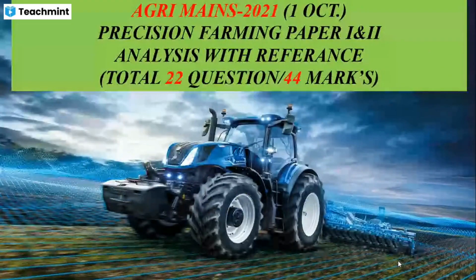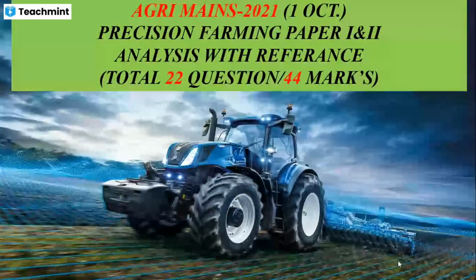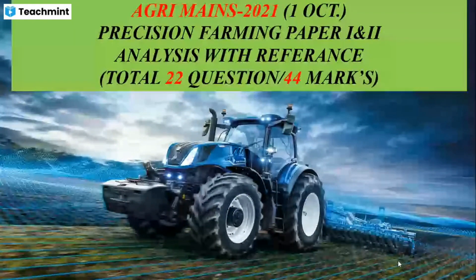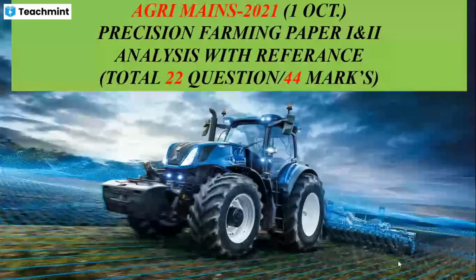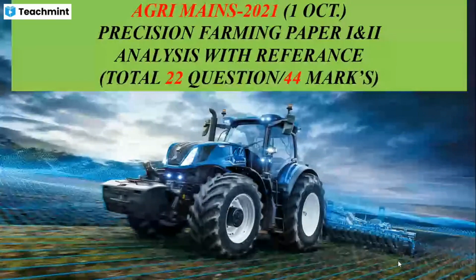The first paper is about precision farming and the second paper has questions that are created so you can search and analyze. When you click and look at references, you can use them for your research. The first choice marks are created for precision farming.